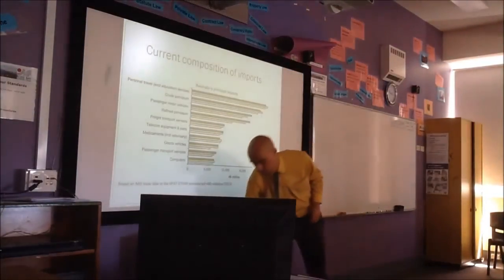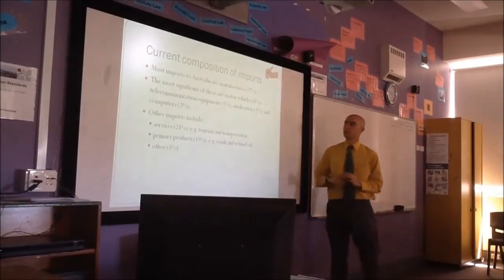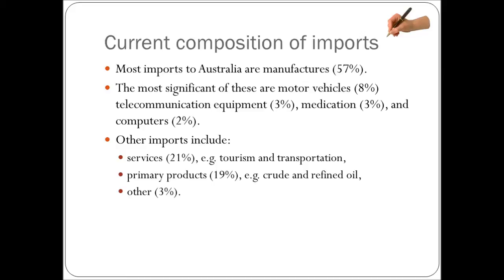The current composition of imports: manufacturers are 57% — that is the current rate. The most significant manufactured imports are motor vehicles at 8%, telecommunications equipment, medication, and computers. Other imports: services at 20% and primary products at 20%. The primary services we import are tourism and transport. The main primary products imported are crude and refined petroleum.